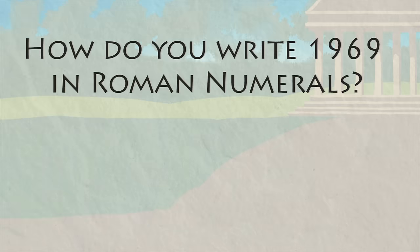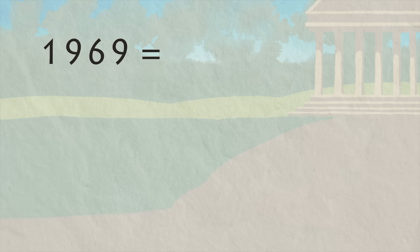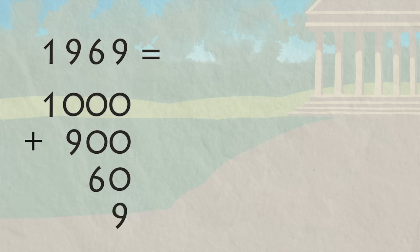How about a really big number? A lot of times people write years in Roman numerals. Have you ever seen that before? Like on important statues or at the end of movies? How about the year 1969, the year people first walked on the moon? How would we write one thousand nine hundred and sixty-nine? First, let's break it up into smaller pieces. Remember, 1969 is the same as one thousand plus nine hundred plus sixty plus nine.